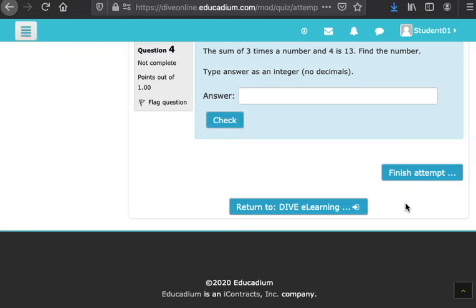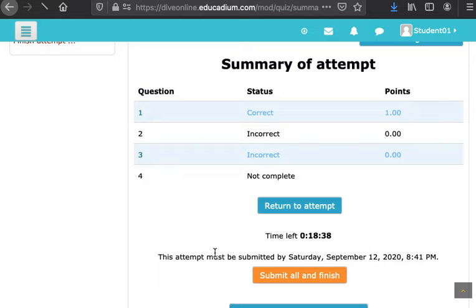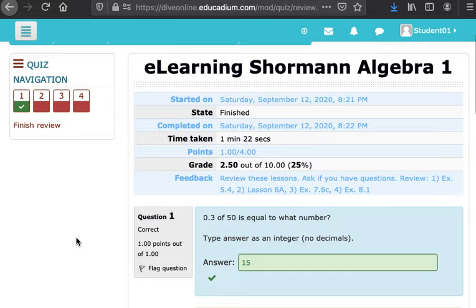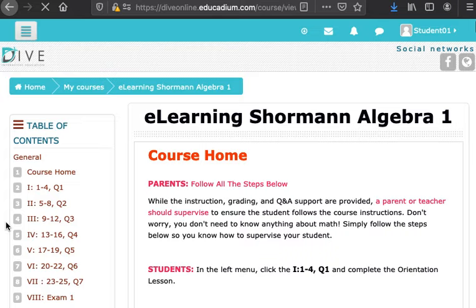There it gives you a grade. You can review again all of that information. When you're done reviewing and everything, you can click that finish review. You can just go back to Algebra 1 there. You're done with that section. You're ready for the next section.